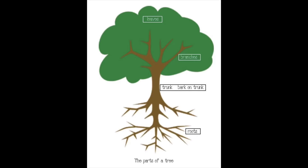Another important part of the tree is the outside layer called the bark. The bark protects the tree from outside forces such as heat, cold, insects, and bacteria. Bacteria are very small living things that can cause disease.